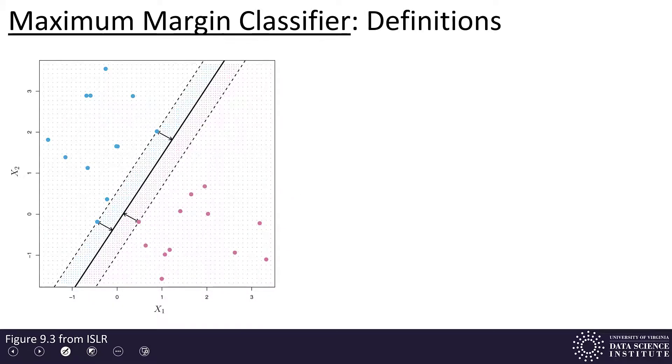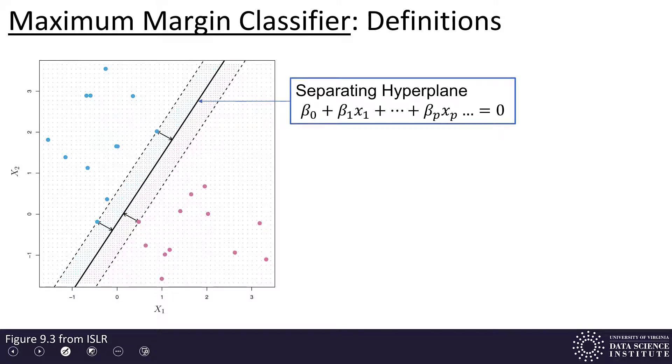So let's talk about some definitions. Let's be a little more formal than our early pictures. First thing we want to define is the separating hyperplane. And so the separating hyperplane is a p-1 dimensional plane, where p is your number of feature variables. And it's given by this formula shown here.